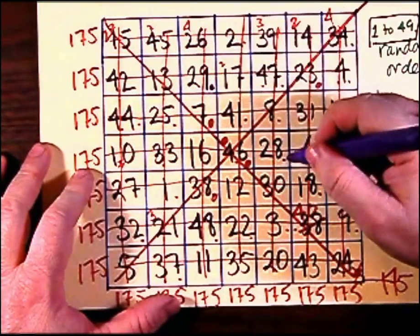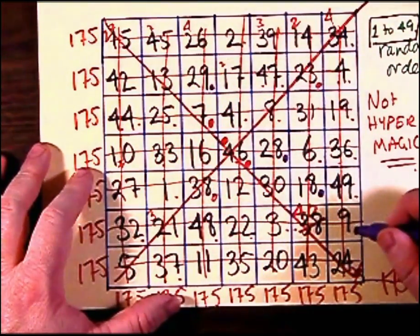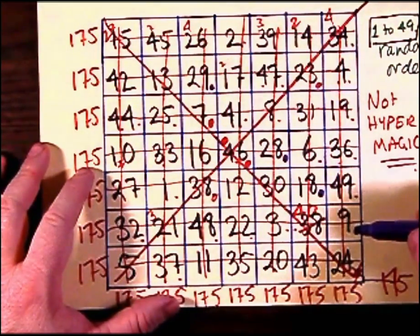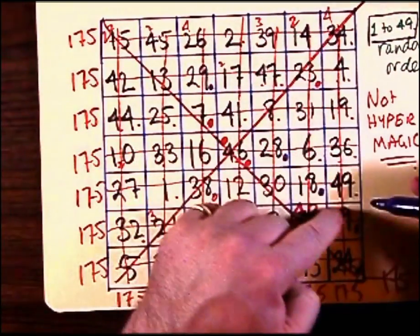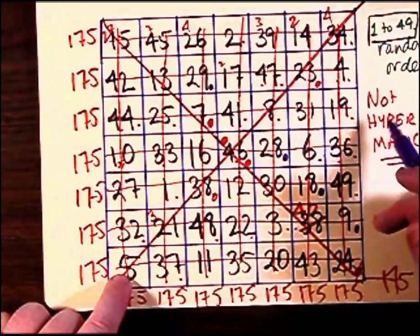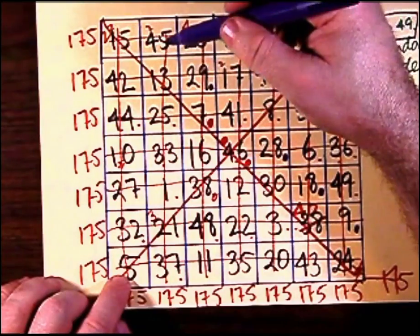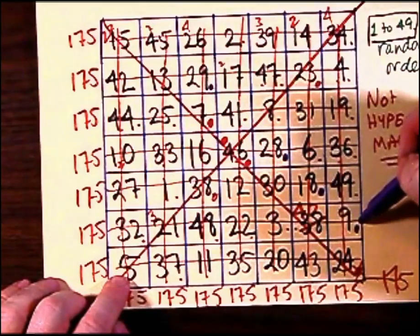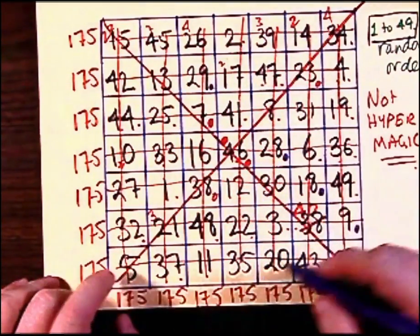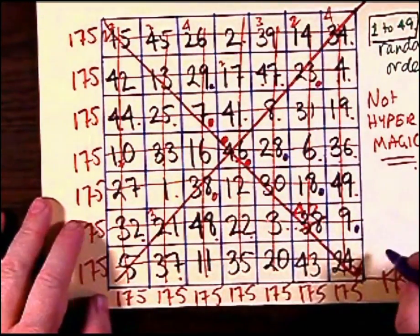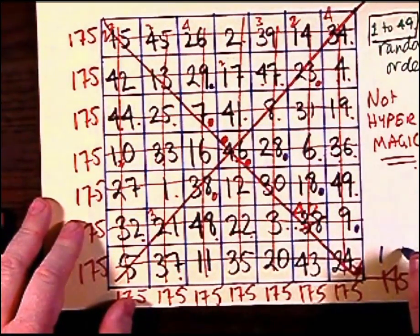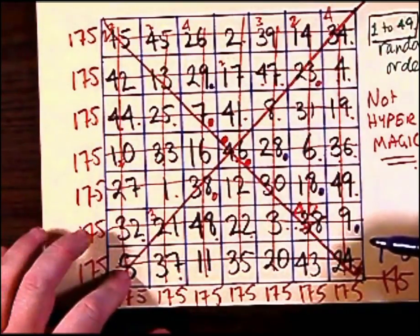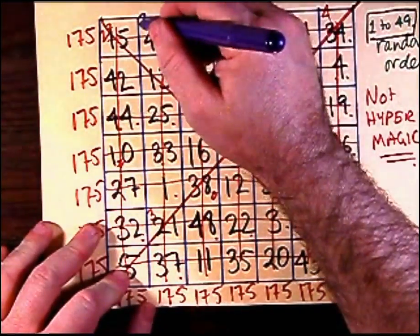So the algorithm that is used to make this square can be used to create magic squares that are of any odd dimension. So order five, order seven, order nine, order 11, order 13, order 15, and so on, will produce magic squares in exactly the same way. And of course, the magic number will be different. And the magic number obviously goes up as you increase the size of the magic square.